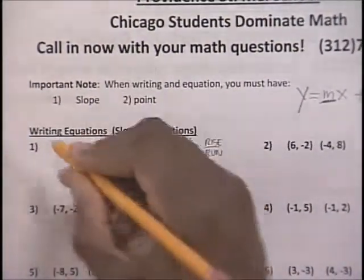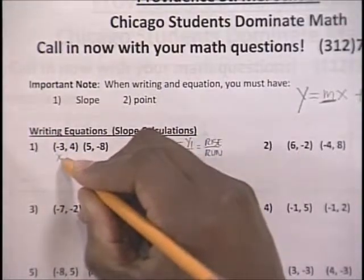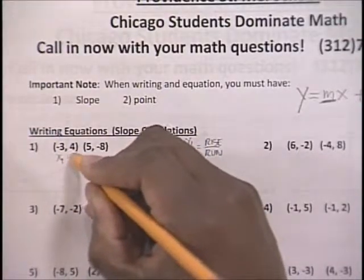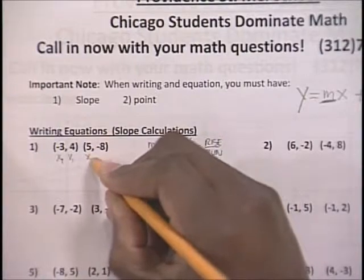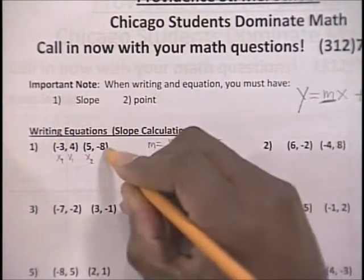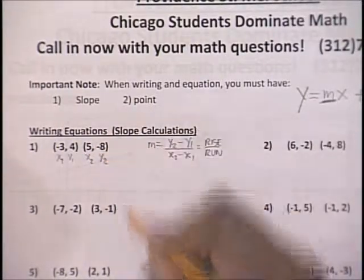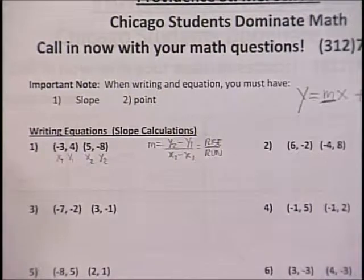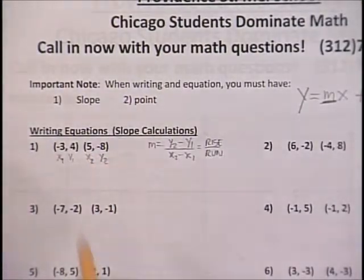Let's label the points. Let's call this x1, y1 — the first value is always an x value. Let's call the second point x2, y2.